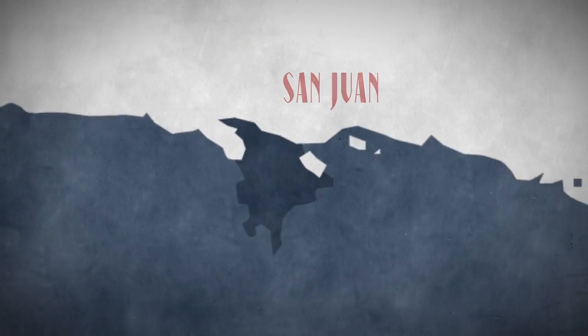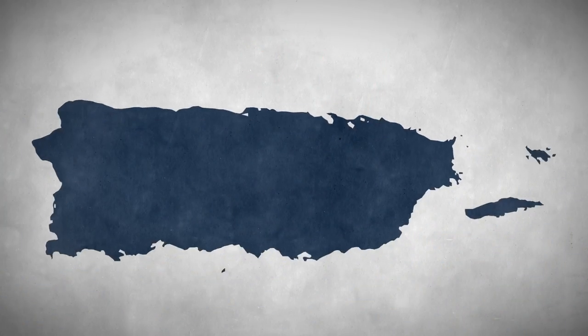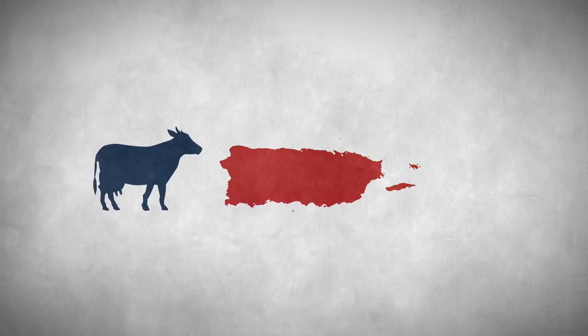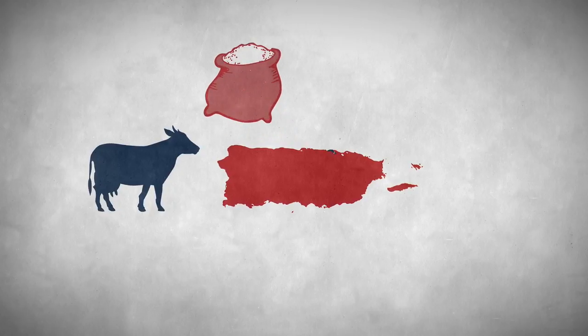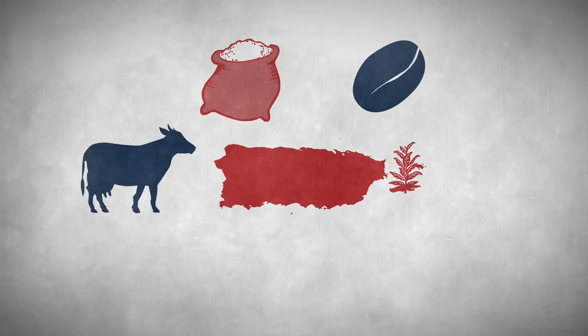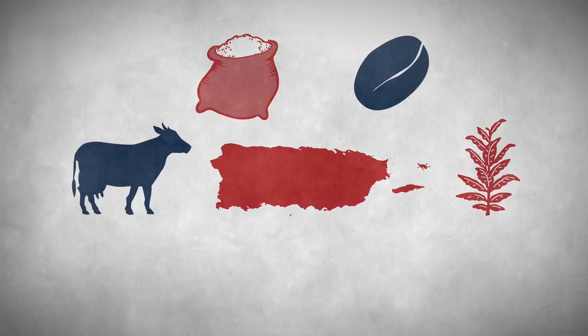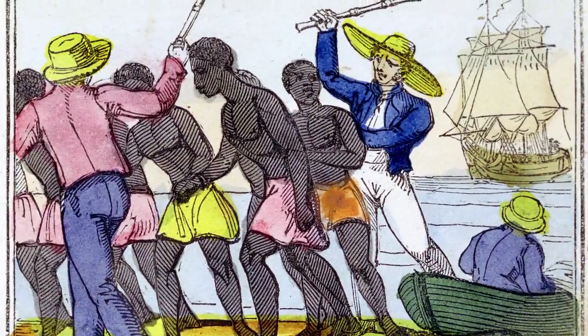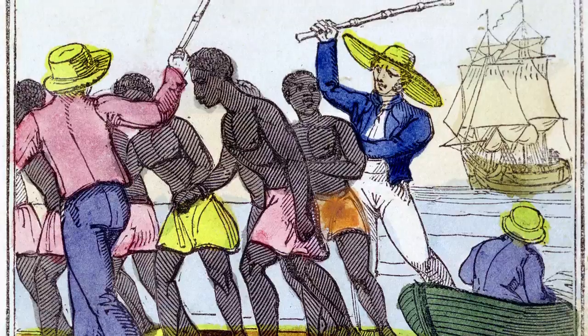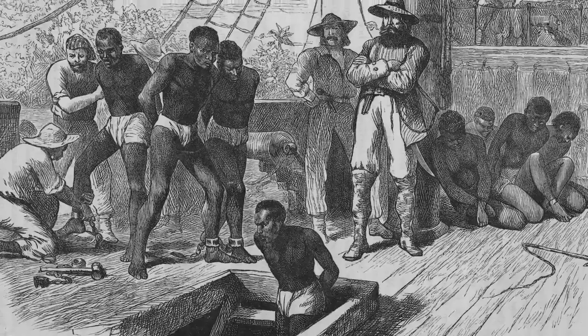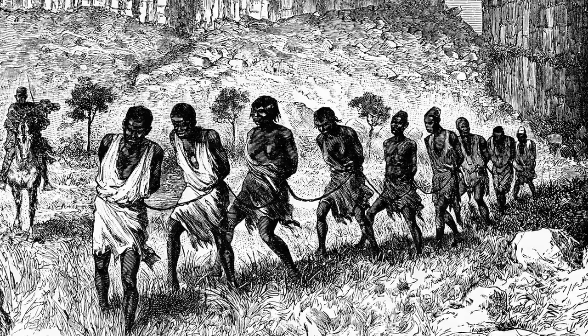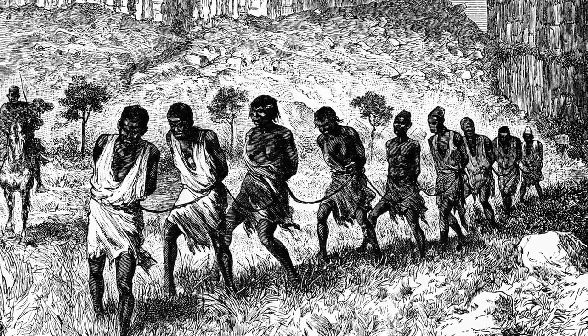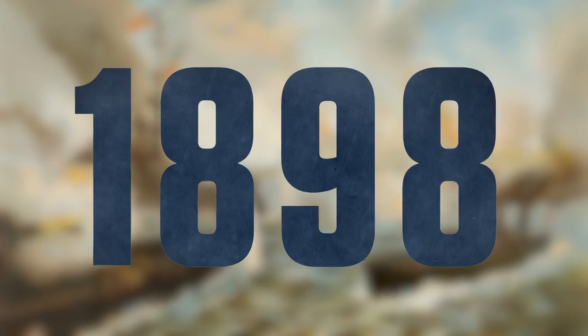For nearly 400 years under Spanish rule, Puerto Rico would produce cattle, sugar cane, coffee, and tobacco. To cultivate these commodities, the Spanish brought enslaved Africans and forced them to work under brutal conditions. But Spanish rule of the island eventually came to an end.